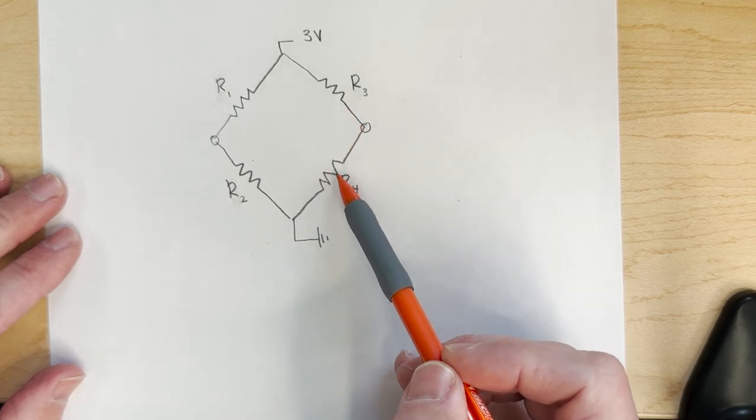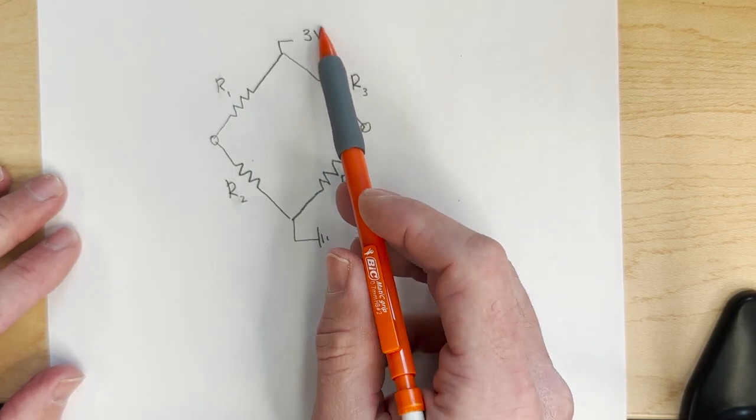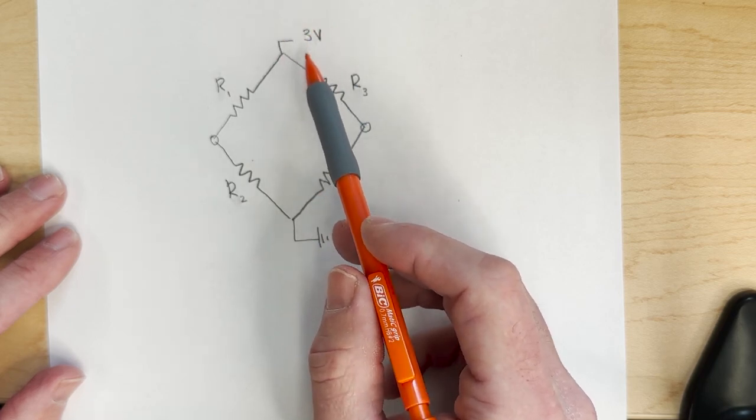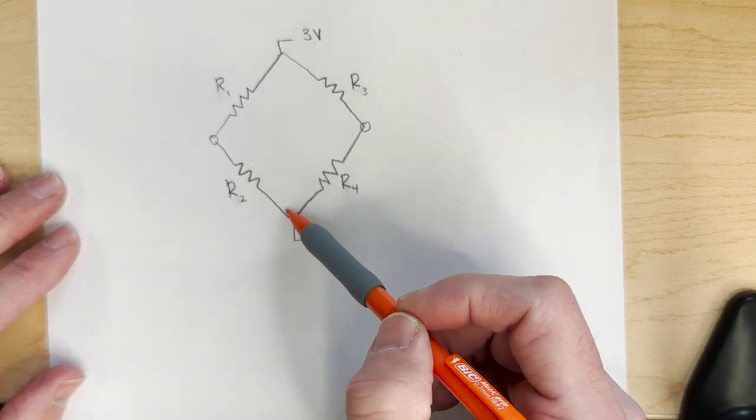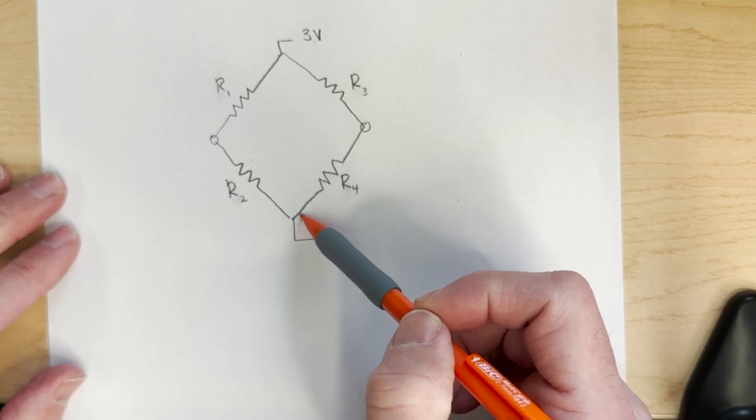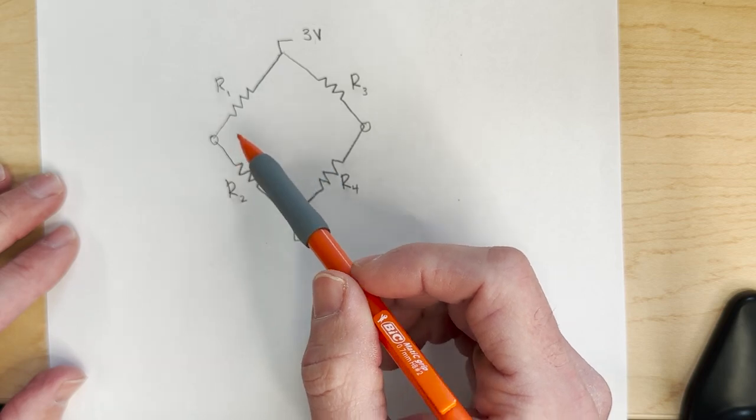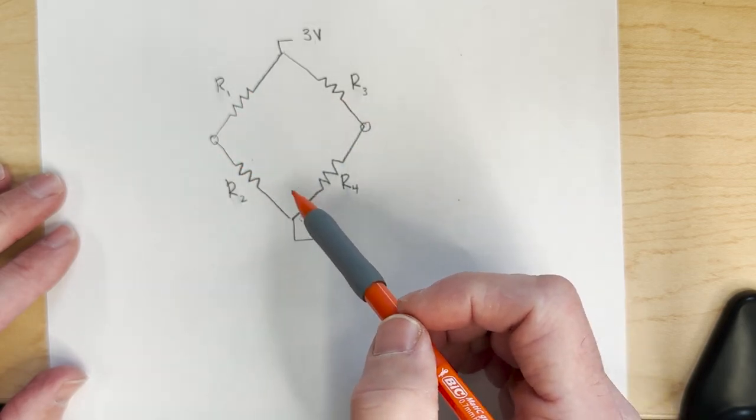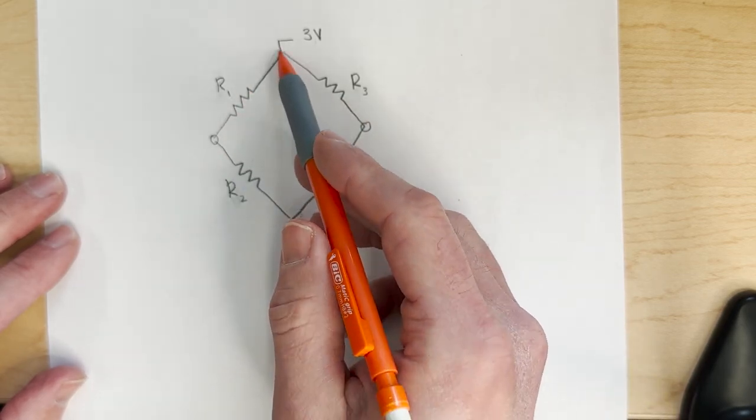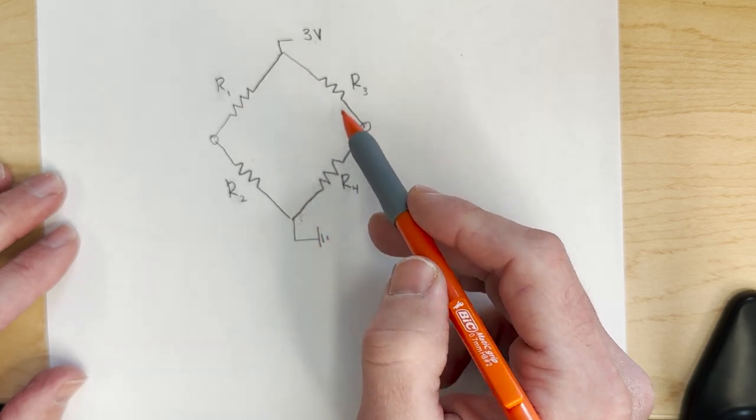We will actually be putting three volts into the top here, and then we have ground attached to the bottom. Now if this thing is all in balance, meaning that these resistors are all the same, we should get the same voltage drop across both sides of this bridge.